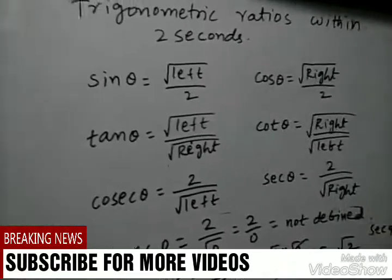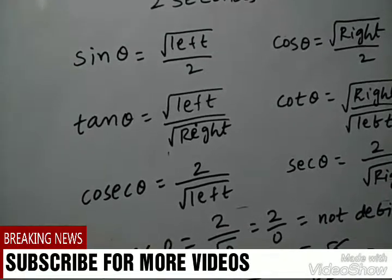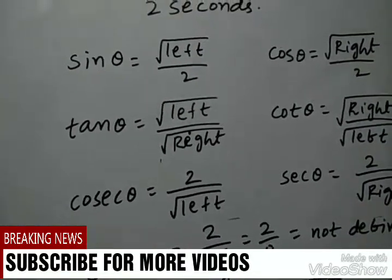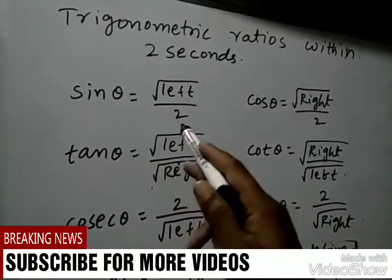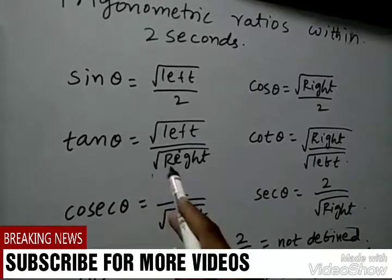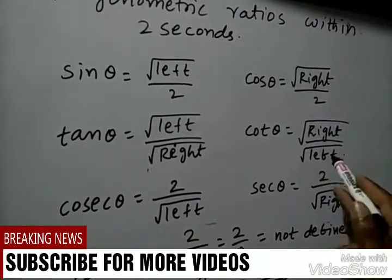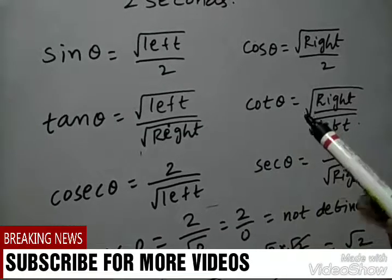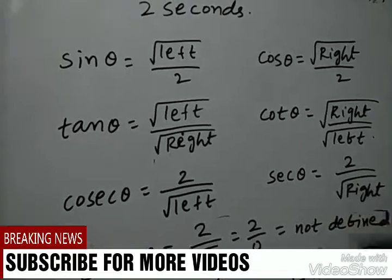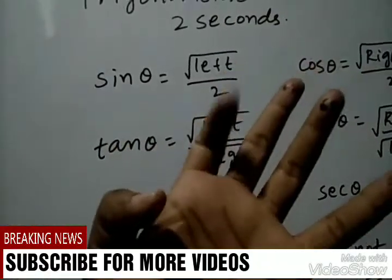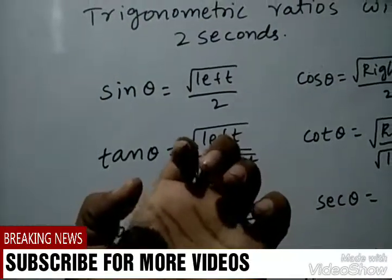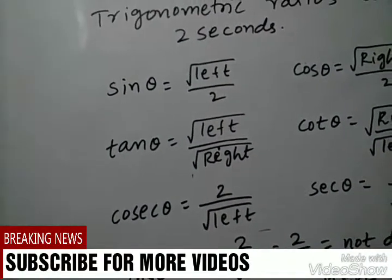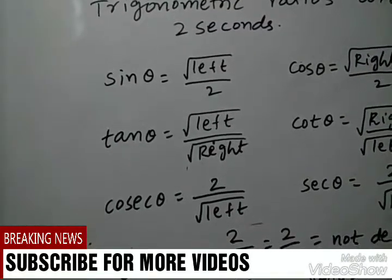This is the video about trigonometric ratios within 2 seconds by using the fingers technique. If you know these 6 formulas — sin theta is root left by 2, cos theta is root right by 2, tan theta is square root of left by right, cot theta is root right by left, cosec theta is 2 by root left, sec theta is 2 by root right — and remember the fingers are 0, 30, 45, 60, and 90, then you can do any formula within 2 seconds. If you like this video, please subscribe to my channel.